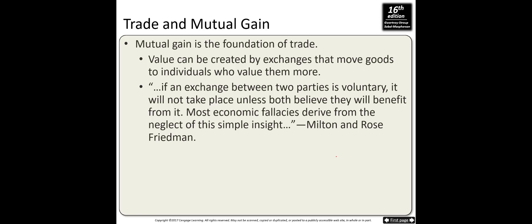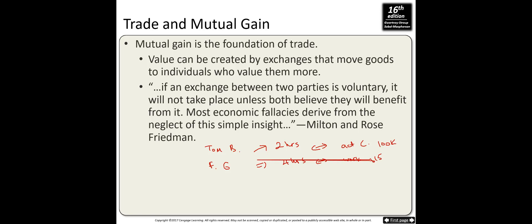Next, we talk about trade. Trade creates value — mutual gain is the foundation of trade. Value can be created by exchanges that move goods to individuals who value them more. For example, Tom Brady can mow the lawn in two hours, but in those same two hours he can act in a commercial and make $100,000. Forrest Gump, Tom's neighbor, can mow the lawn in four hours.